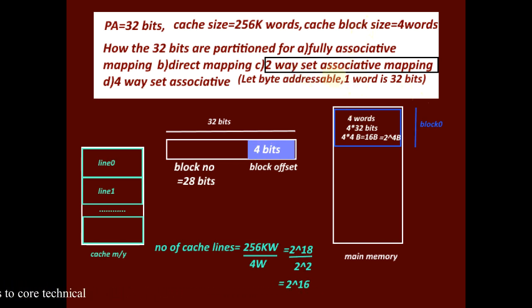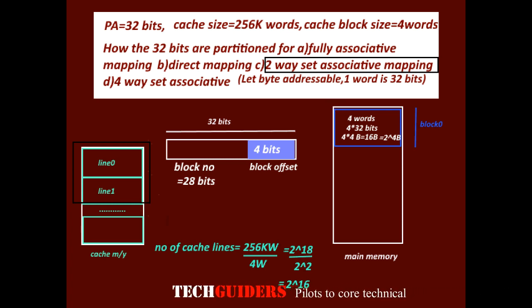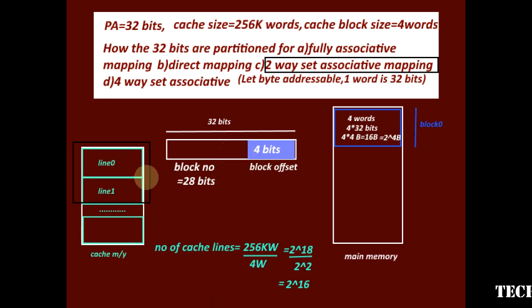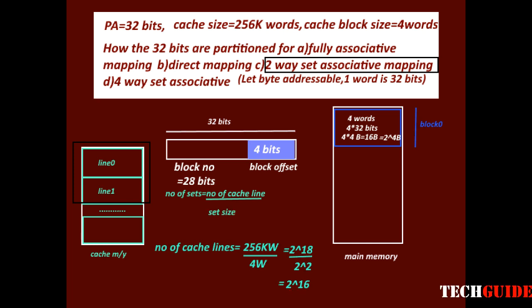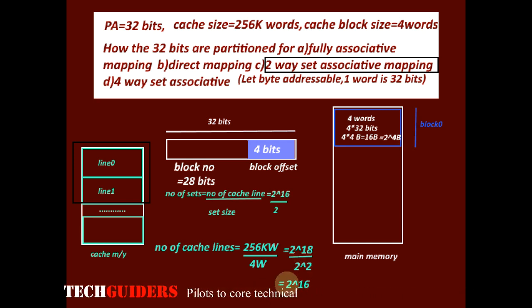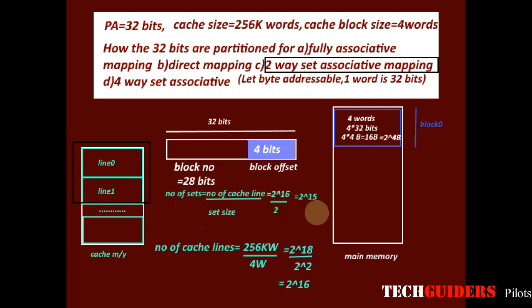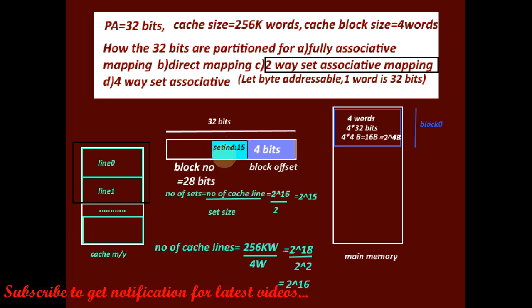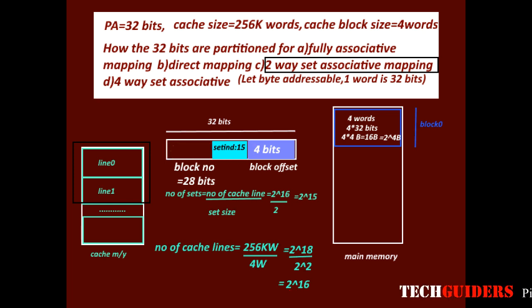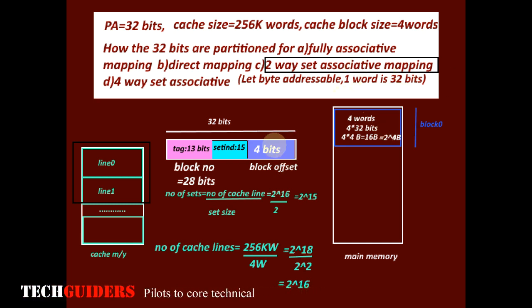In two-way set associative mapping, cache lines are grouped into sets with each set consisting of two lines. Each main memory block is directly mapped to one particular set, with the least significant bits matching the set index, and within the set it can use any cache line. The number of sets = number of cache lines ÷ 2 = 2^16 ÷ 2 = 2^15. So 15 bits are required for the set index, and the remaining bits form the tag: 28 − 15 = 13 bits. Partitioning: tag = 13 bits, set index = 15 bits, word = 4 bits.